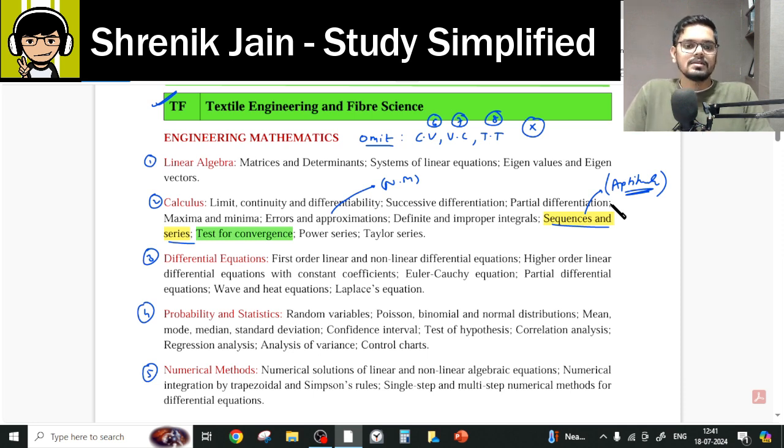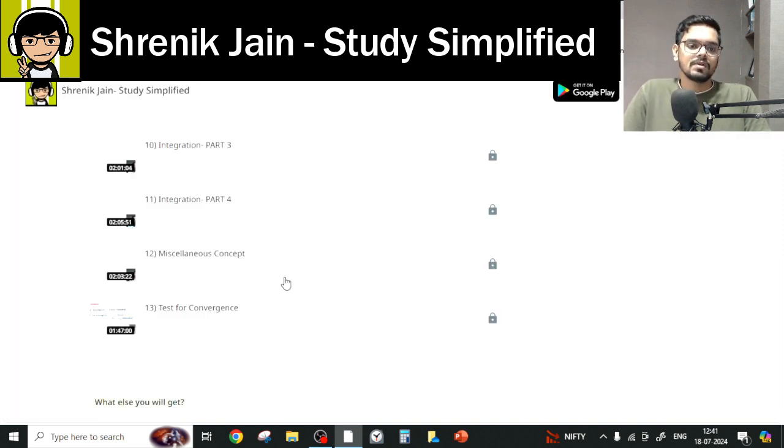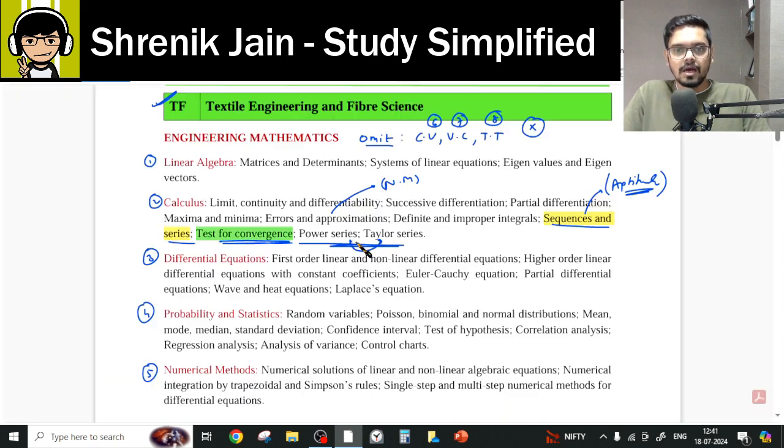Then the second is, what about Test for Convergence and Power Series, and Taylor Series? So Test for Convergence is present here. And Power Series and Taylor Series are correlated, so it is covered in the Taylor Series only. So I hope this part is clear. There is no issue now in Calculus.